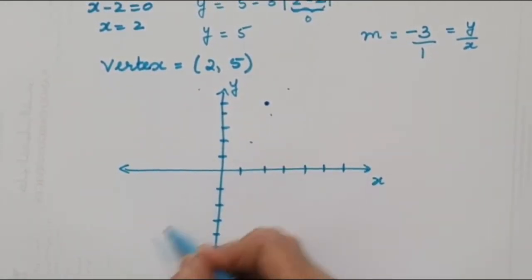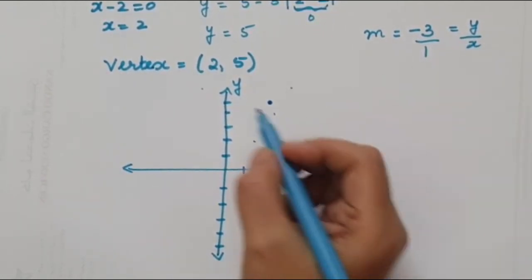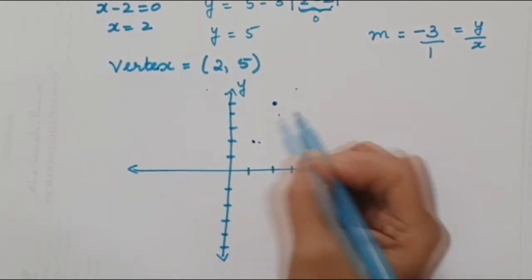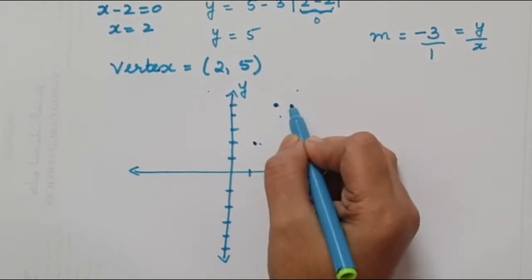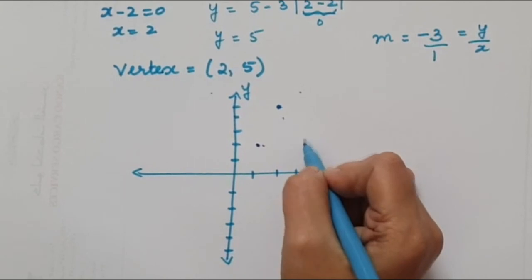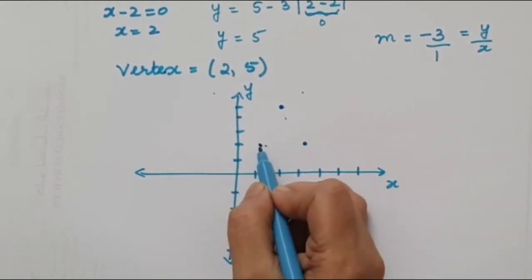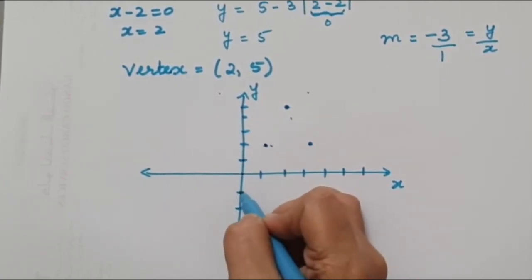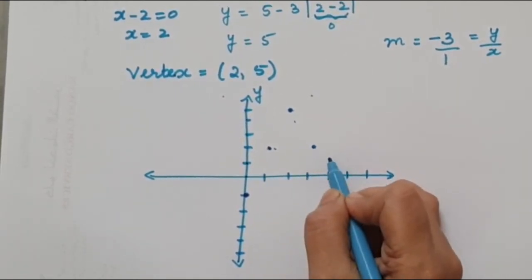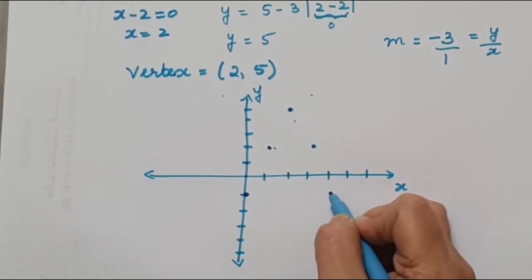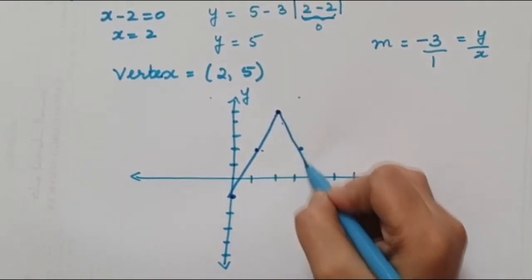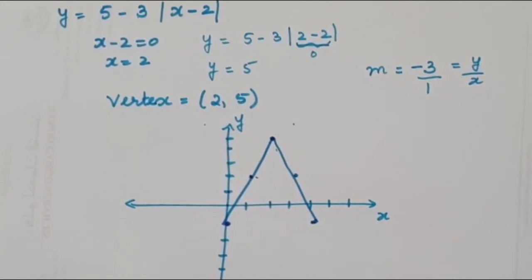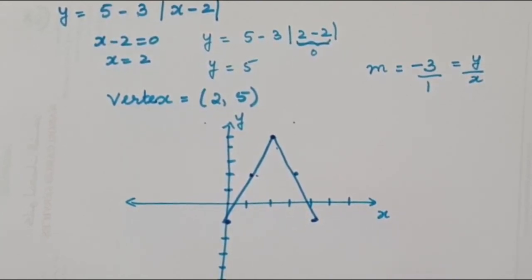Our curve opens downward with slope 3. Moving 1 block in x and 3 blocks down in y for each successive point on both sides of the vertex, we plot and join all points to complete the downward-opening V-shaped graph. Using this method we can sketch the graph of absolute value functions without any difficulty.